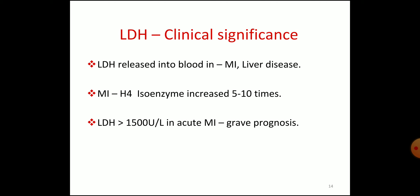What are the clinical significances of lactate dehydrogenase? LDH is released into the blood in myocardial infarction, liver disease, etc. In myocardial infarction, the H4 isoenzyme (LDH1, from the heart) increases 5 to 10 times. In heart attack, the heart muscles are destroyed or infarcted and the enzyme is released, so 5 to 10 times more enzyme level is seen in serum. LDH greater than 1500 units per liter in acute myocardial infarction shows a grave — bad — prognosis.